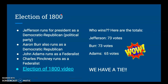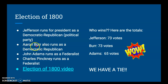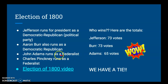Back to the election of 1800 — it is a crazy, crazy election. Thomas Jefferson runs for president as a Democratic Republican; that's his political party. You might also know Aaron Burr — he's featured in the musical Hamilton and is famous for killing Alexander Hamilton in a duel. Aaron Burr is also running as a Democratic Republican. We see John Adams running as a Federalist — he's the incumbent, the president at this time. Also running as a Federalist is a guy named Charles Pinkney.